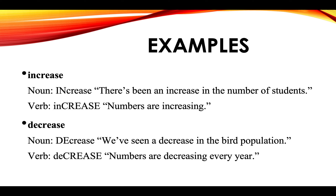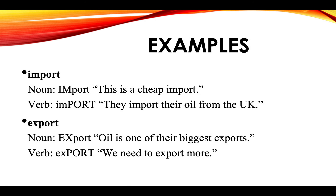Konnyan wapran deuxième mo a. DEcrease — louske el se yon non: 'We've seen a decrease in the bird population.' Nouske el se yon verb, nou di deCREASE: 'Numbers are decreasing every year.' Lot ekzamp: IMport — noun; imPORT — verb: 'This is a cheap import.' / 'They import their oil from the UK.'